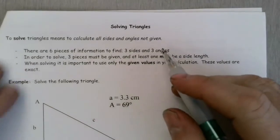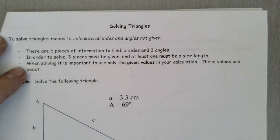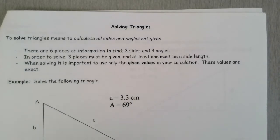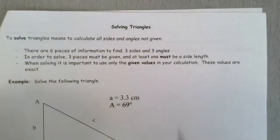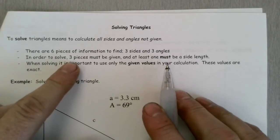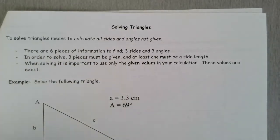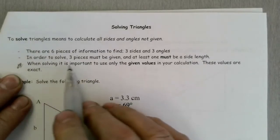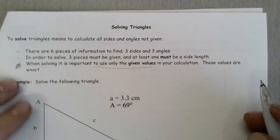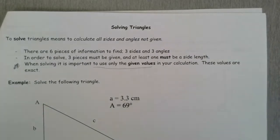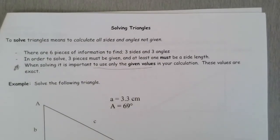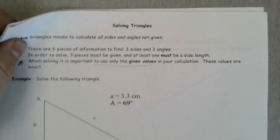Now we've got one other thing to look at: solving triangles. When we say 'solve a triangle,' we want you to find everything you don't know about it. There should be six pieces of information — three sides and three angles. To solve it, you need three of those given. We're asking you to find the three things you don't know. An important note: when solving, use only the given values in your calculations — if you've made a mistake in one calculation, you don't want it to affect the others.